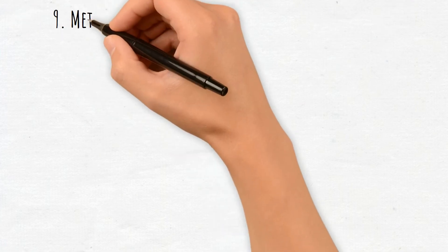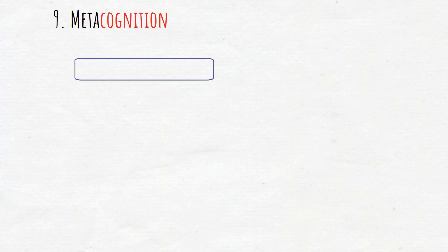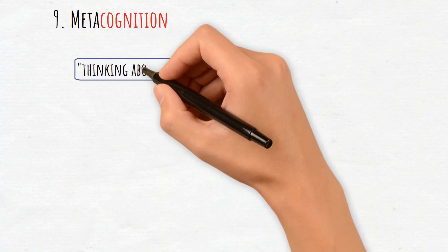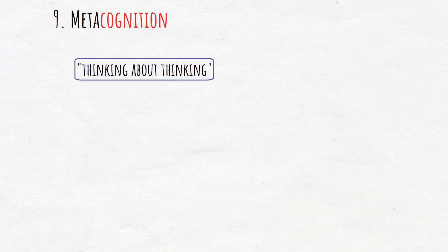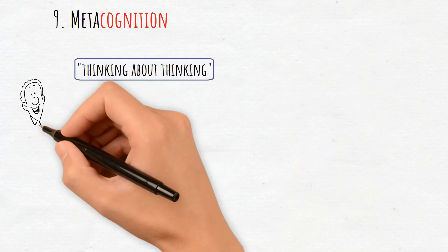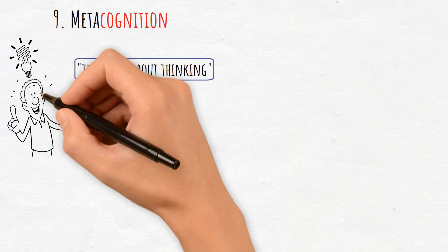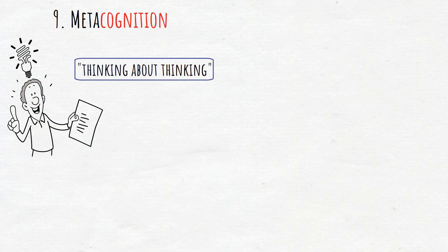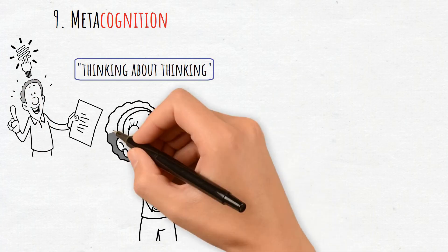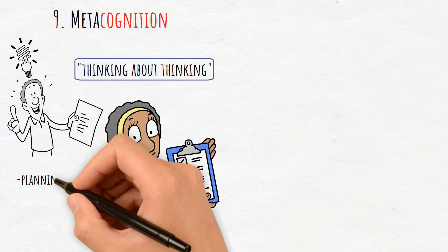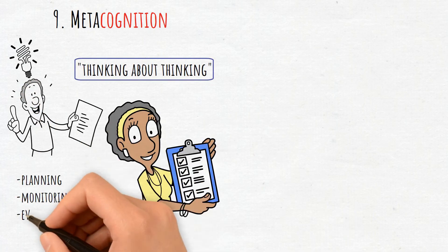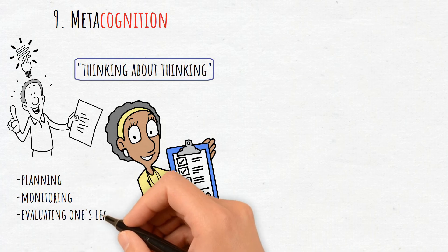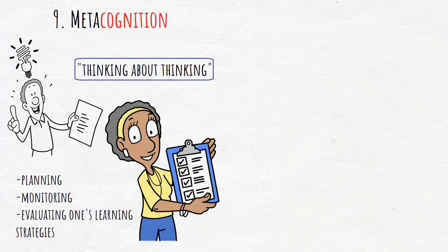9. Metacognition. Metacognition, or thinking about thinking, refers to the awareness and regulation of one's own cognitive processes. It includes skills like planning, monitoring, and evaluating one's learning strategies.